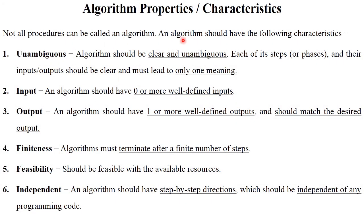Below are some algorithm properties and characteristics. Not all procedures can be called an algorithm. An algorithm should have the following characteristics: unambiguous, input, output, finiteness, feasibility and independent — these are the 6 properties or characteristics of an algorithm. First, what is meant by unambiguous? Algorithm should be clear and unambiguous. Each of the steps in the algorithm and their inputs and outputs should be clear and must lead to only one meaning. Each and every step included in the algorithm must be clear and unambiguous — don't be complex.